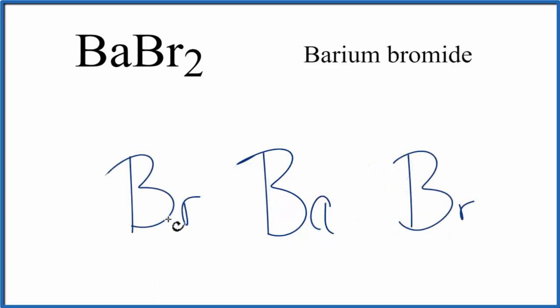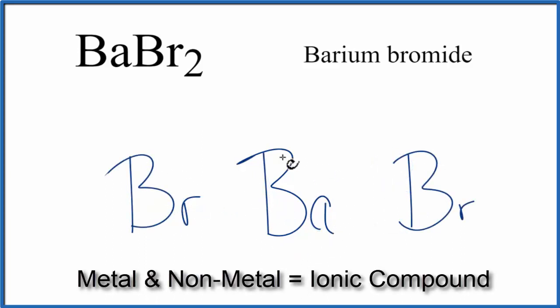Barium, that's a metal, and then bromine, that's a non-metal. So we have a metal bonded to non-metal or non-metals. We have an ionic compound.